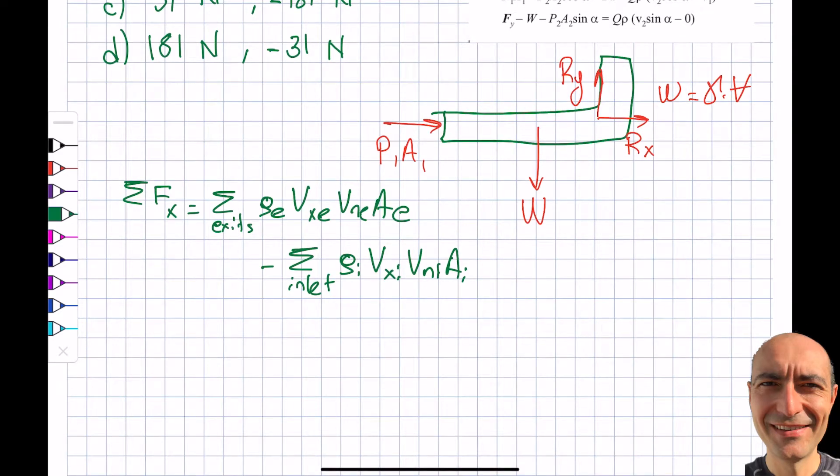Looking at the forces in the x direction from my free body diagram, you can see that I have Rx which is being asked, plus P1. P1 was 50,000, 50 kilopascals, and A was, the diameter is 0.2, so I'm going to write π(0.1)². Pi r square or pi d square over 4, up to you.